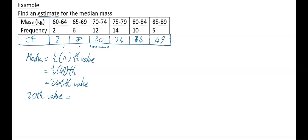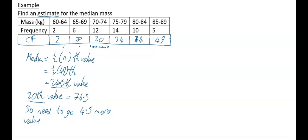The maximum value in the 70–74 class is 74.5. We're at the 20th value and need to reach the 24.5th value, so we need to go 4.5 more values into the next class. The next class is 75–79, so our median is in that class.